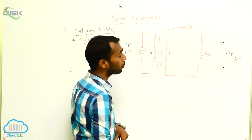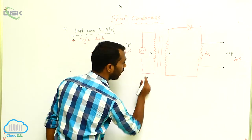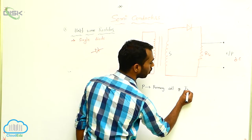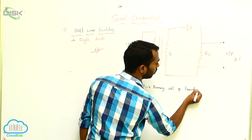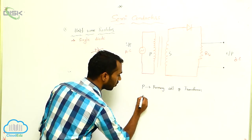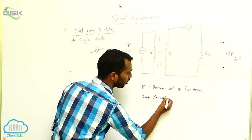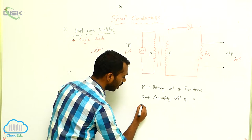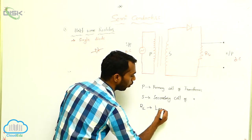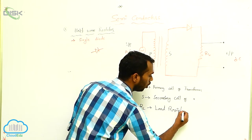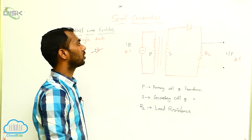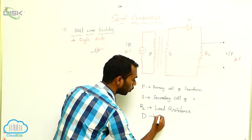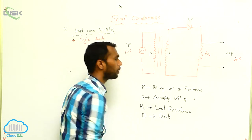Now I am explaining the terminology. P is the primary coil of the transformer. S is the secondary coil of the transformer. RL is the load resistor — it has some resistance called load resistance, and the device is called the load resistor. D is the diode — specifically, a P-N junction diode.